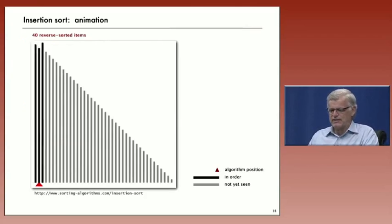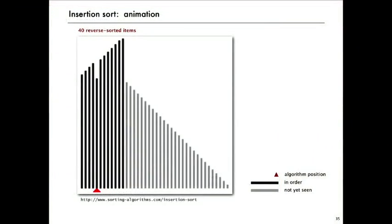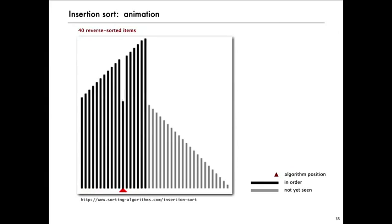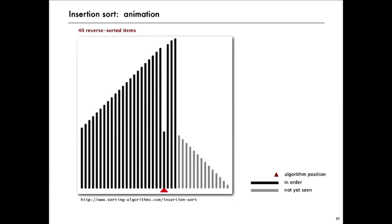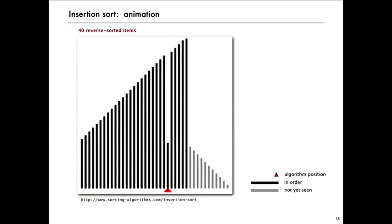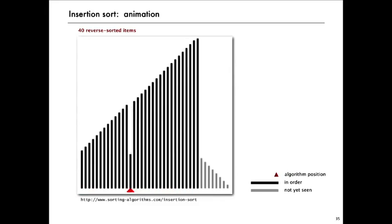So let's see that in the animation. So this is when the items come in in reverse order. Now, every time it gets a new item, it has to exchange it all the way back to the beginning. Same kind of dynamic characteristic as selection sort except for every step. It's not just comparing. It's also exchanging, which makes it even slower in practice.